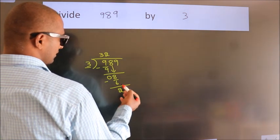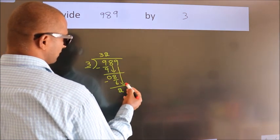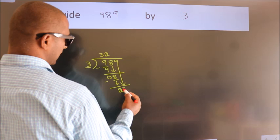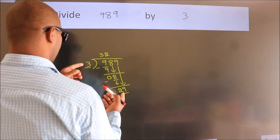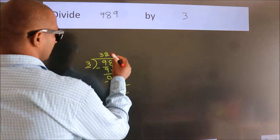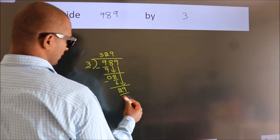After this, bring down the beside number. So, 9 down. So, 29. A number close to 29 in 3 table is 3 nines 27.